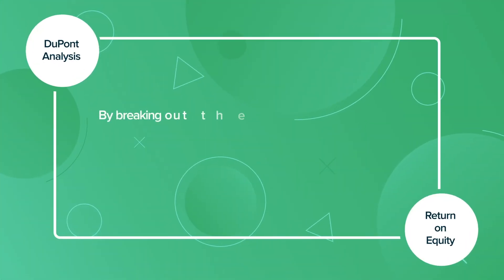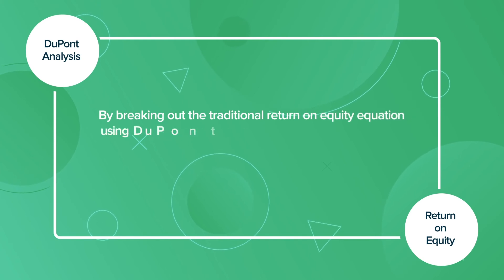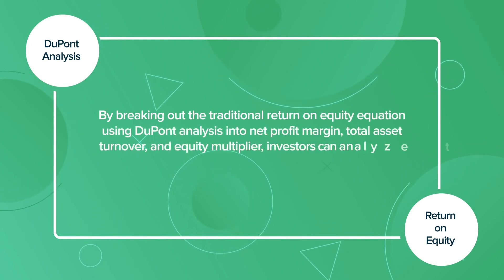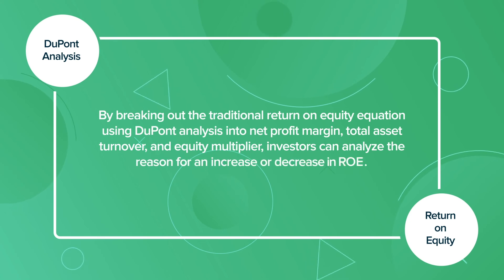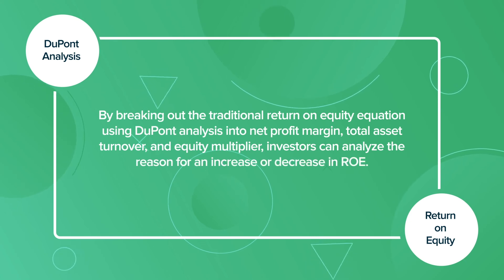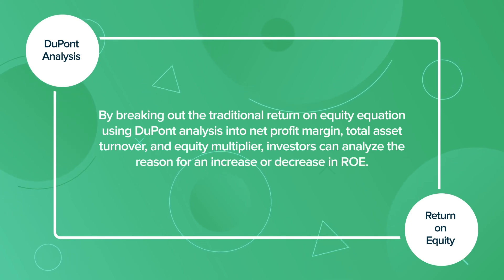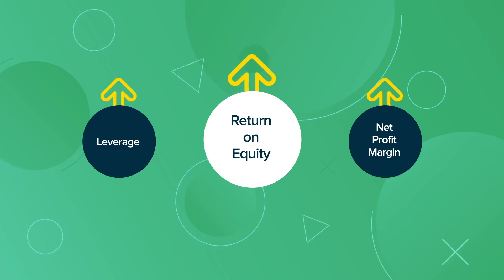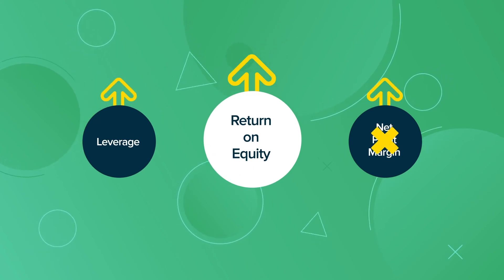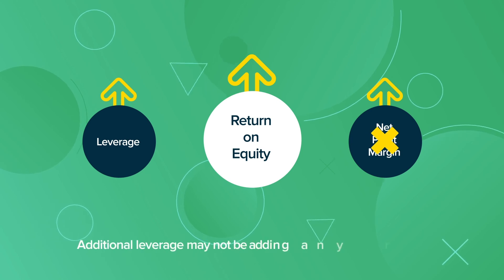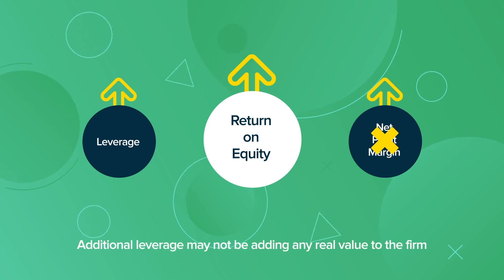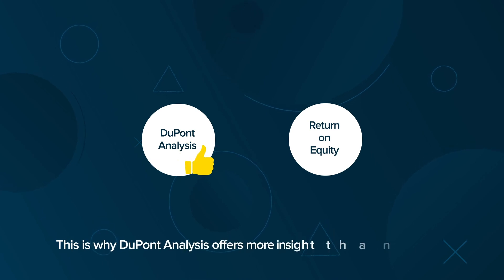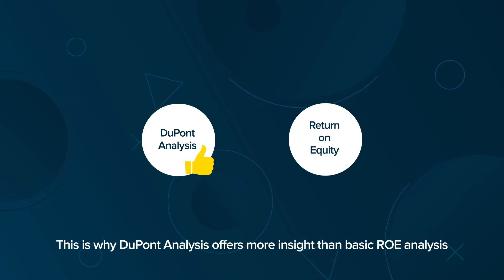By breaking out the traditional Return on Equity equation using DuPont Analysis into net profit margin, total asset turnover, and equity multiplier, investors can analyze the reason for an increase or decrease in ROE. If ROE increases due to higher leverage rather than a greater net profit margin or asset turnover, additional leverage may not be adding any real value to the firm. This is why DuPont Analysis offers more insight than basic ROE analysis.